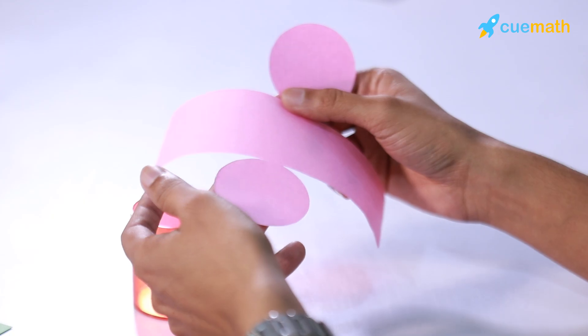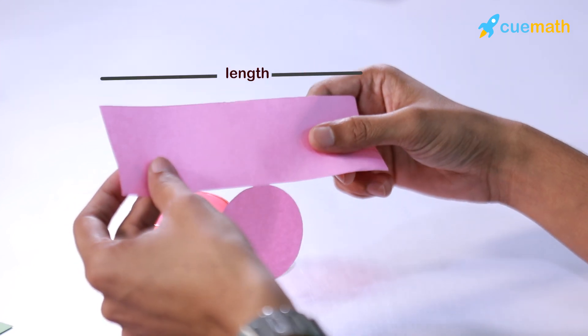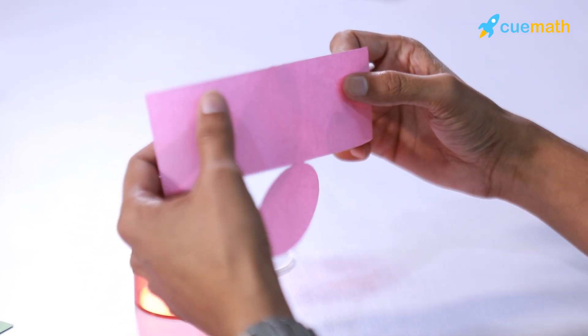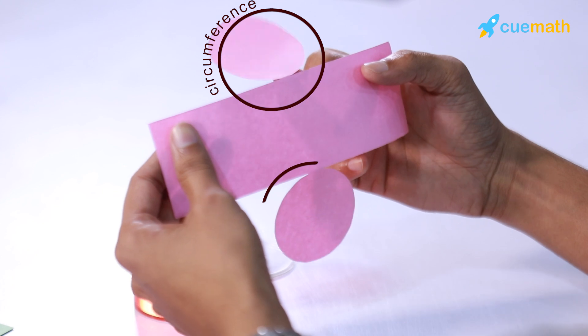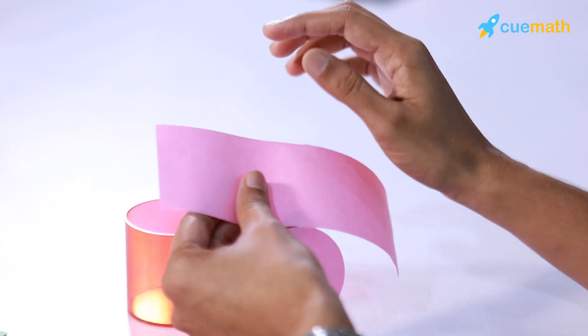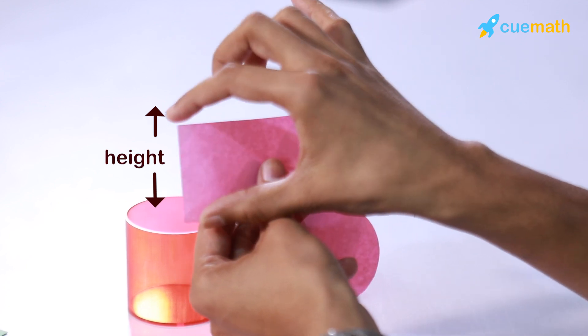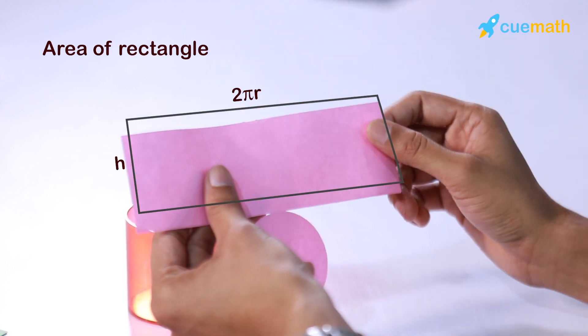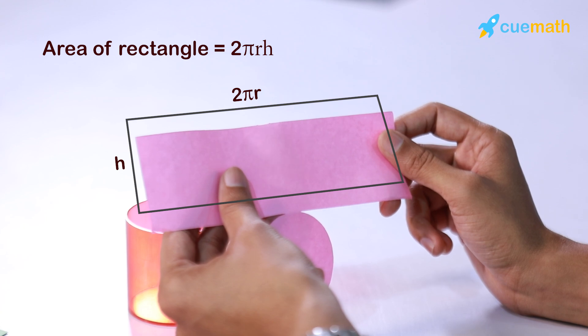This means that the surface area of a cylinder will simply be an addition of all these surface areas. As you can see, the length of this rectangle was simply the circumference of the circle that forms the top and bottom parts of the cylinder. So that's simply 2πr, and the breadth is the height of the cylinder, which is h.